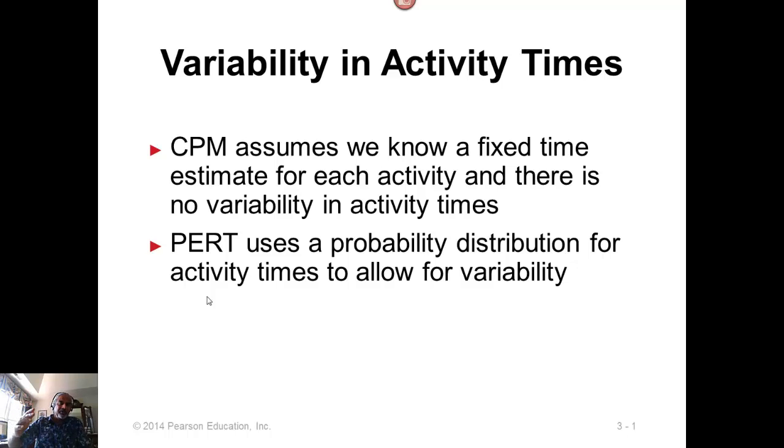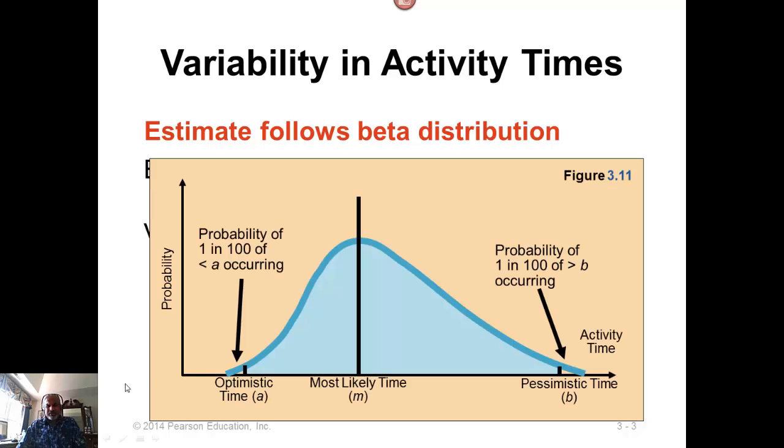But on the other side, if the activity gets delayed, it can go from 5 to 6 weeks or 8 weeks or 10 weeks or 15 weeks or 20 weeks. There is no real hard ceiling for how far off, how much delay there could be in the activity time. So the probability is not symmetric. It's more like a normal distribution with the upper side tail kind of shifted to the right, something like this. This is called a beta distribution, so it is reasonable to assume that if the activity times are variable, then it's going to follow something like a beta distribution.